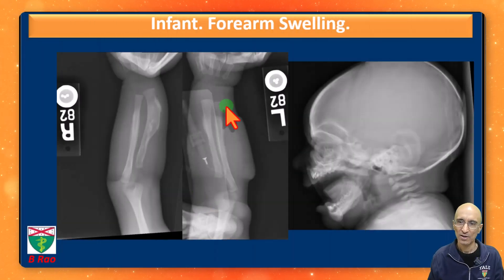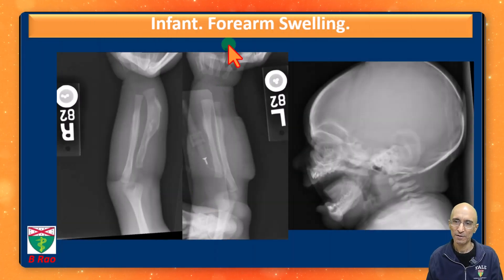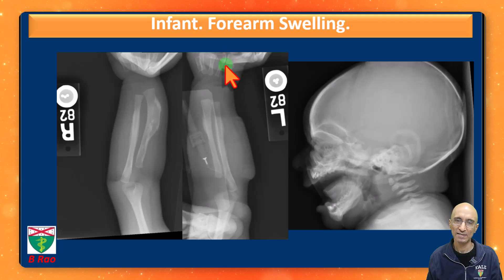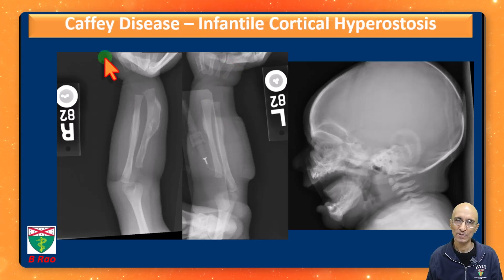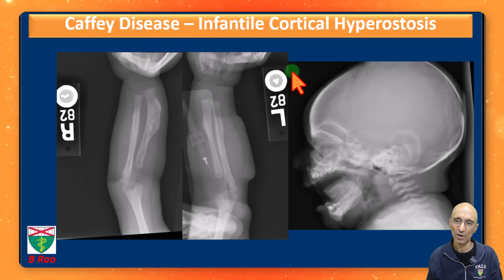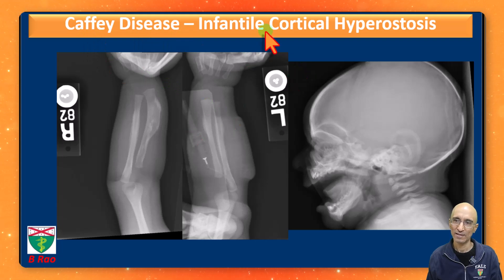By this time we got additional clinical information. Multiple family members had a similar history in the past and they had a diagnosis of Caffey's disease. So our child has infantile cortical hyperostosis.